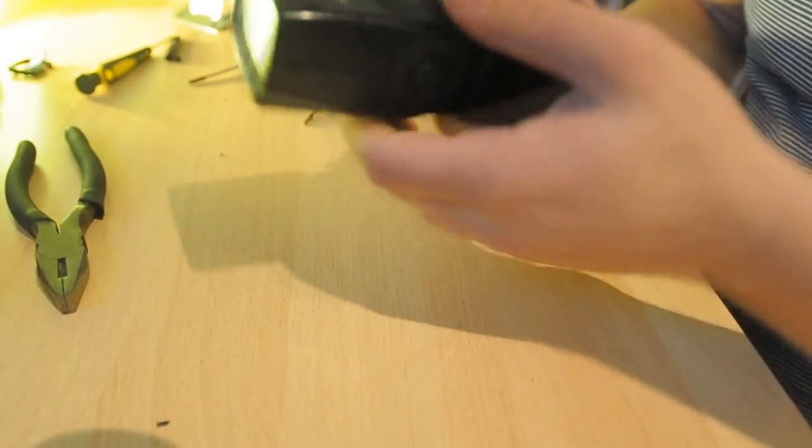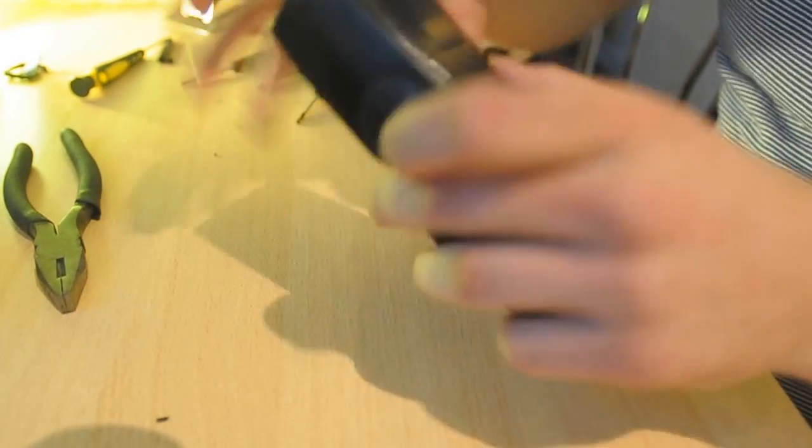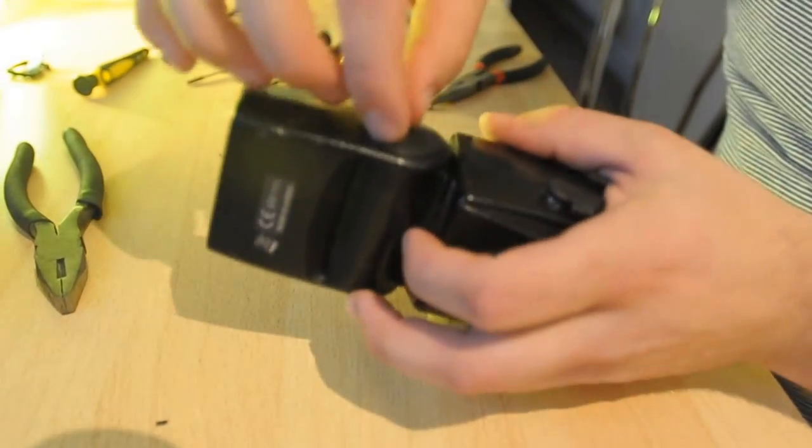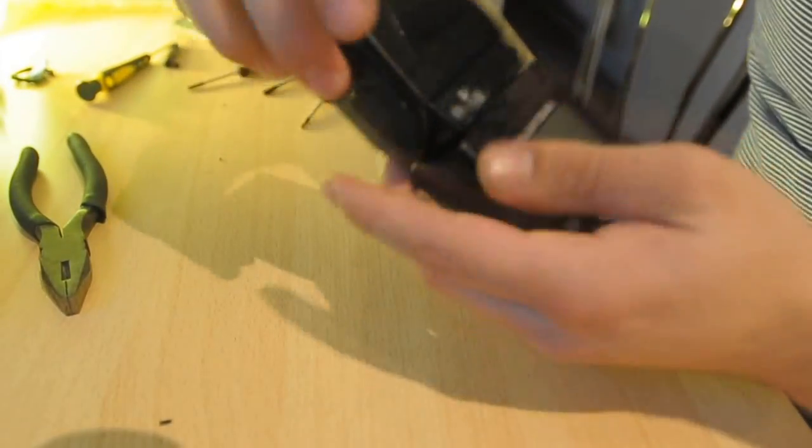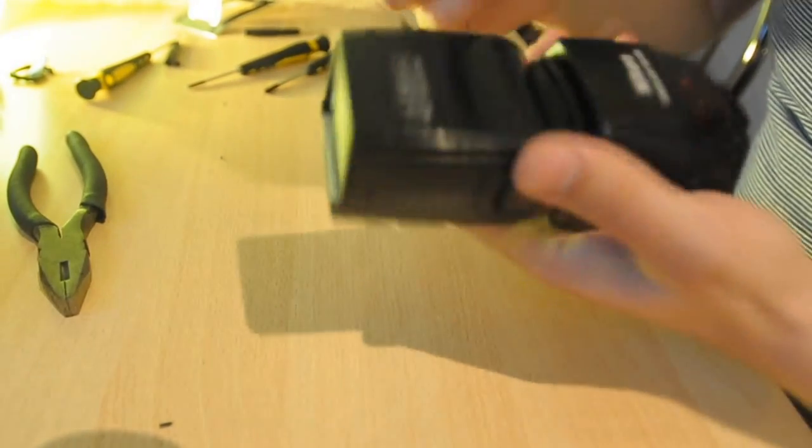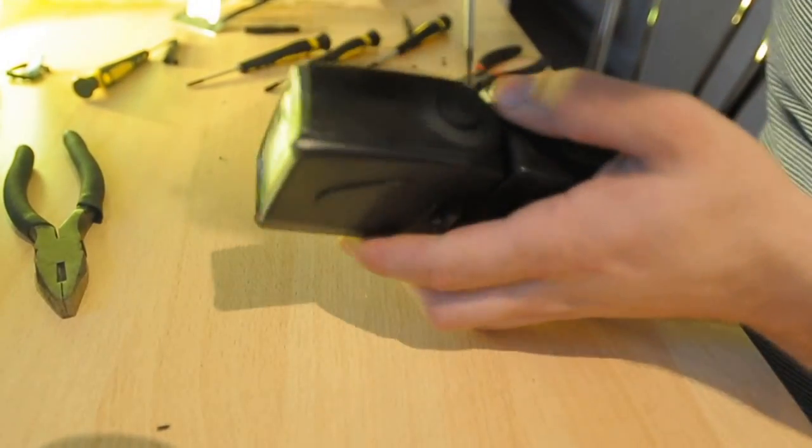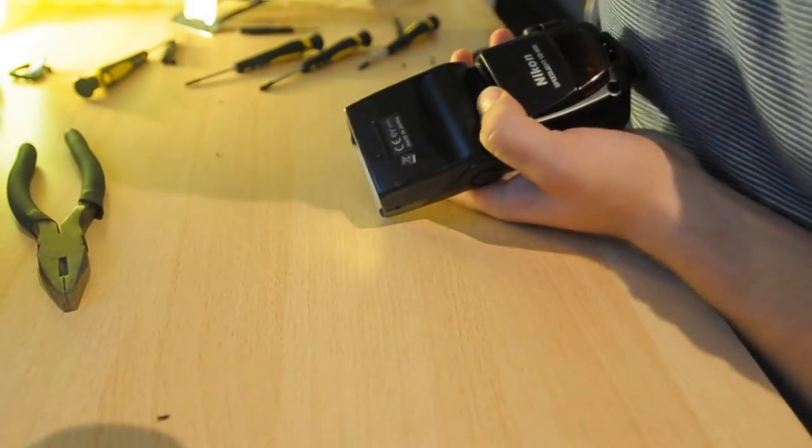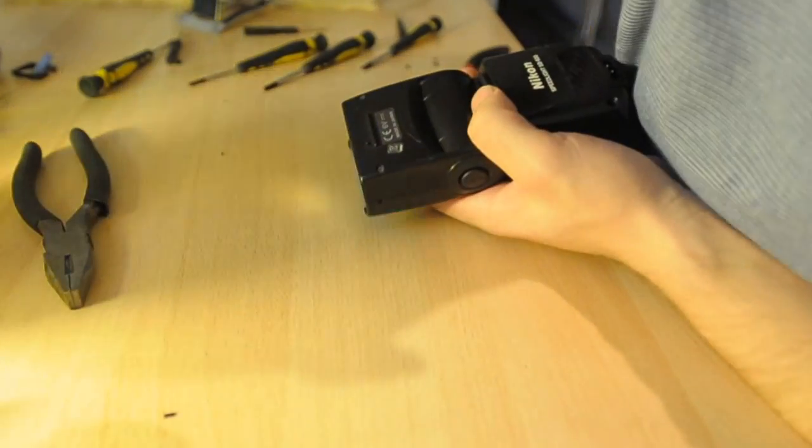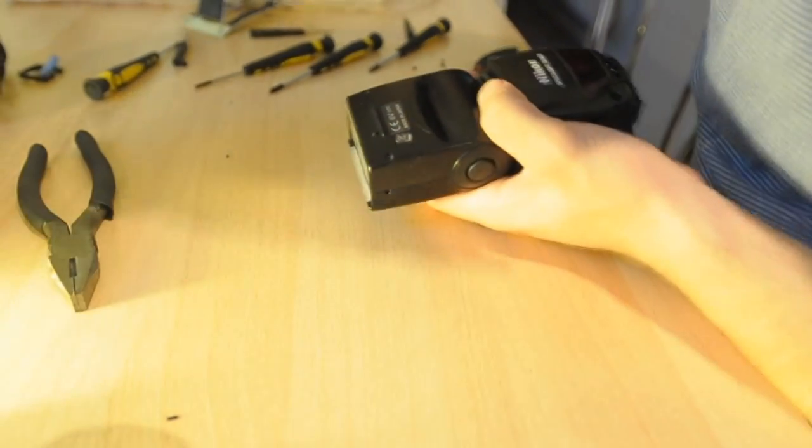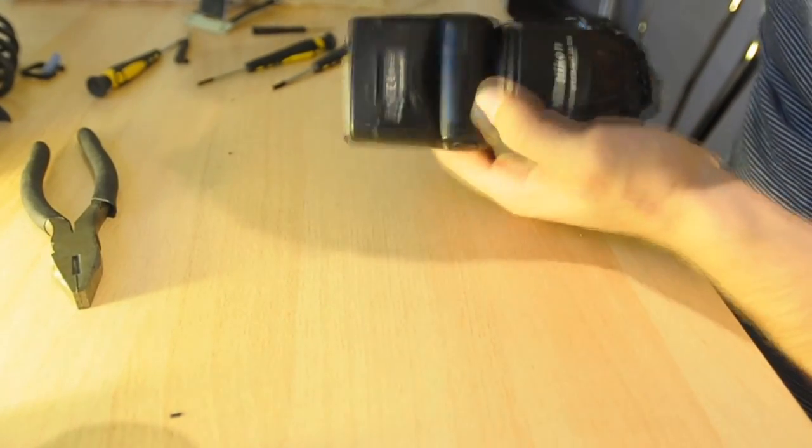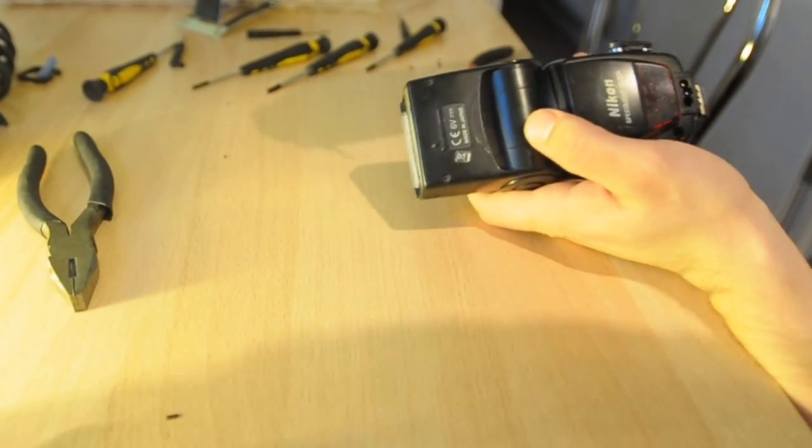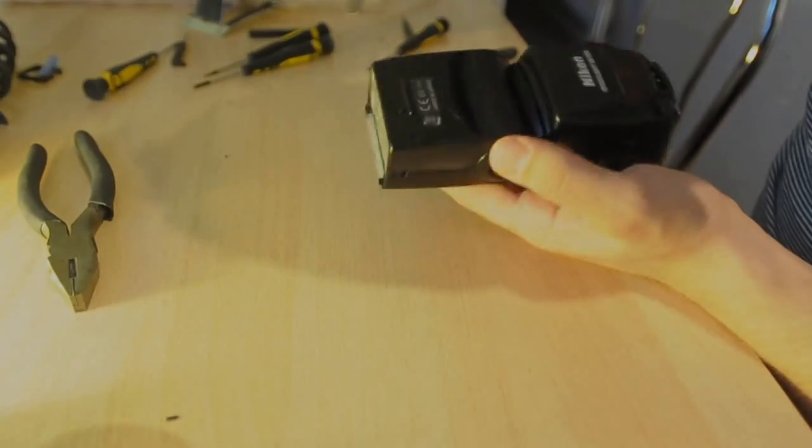So what you're going to do first is, you've got screws under the two sides. So if you just peel the two rubber circles off from each side, which basically covers off the four screws, you've got four screws on each side and you also have two screws on the top as well.